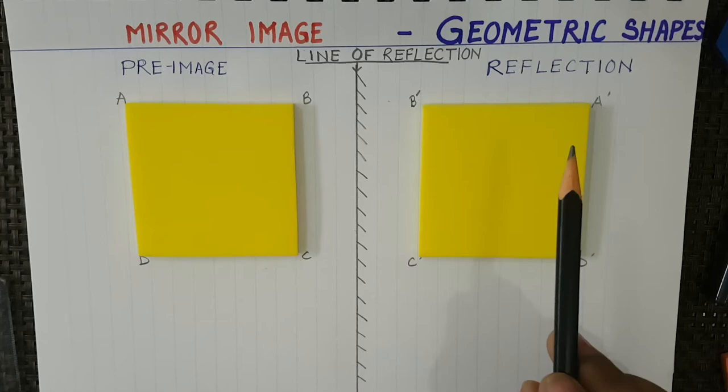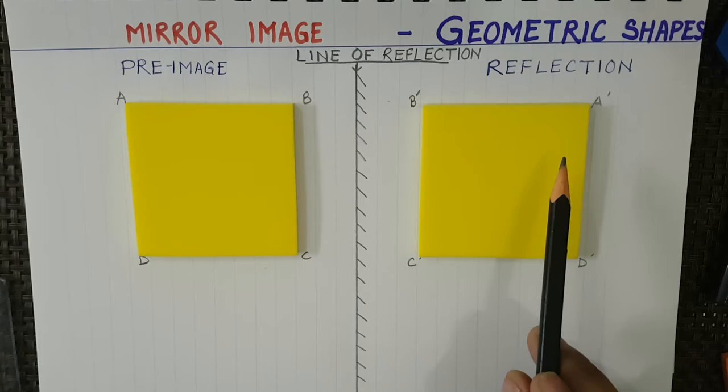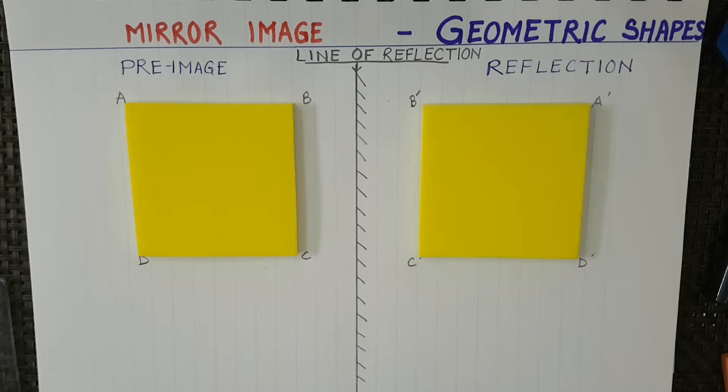All the points of the reflection remain the same, and the distance from the mirror remains the same as in the pre-image. Now let's take some other images.